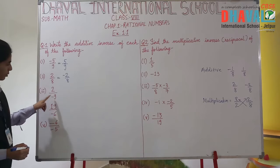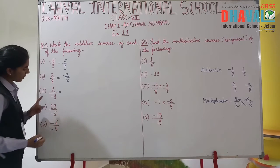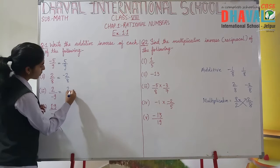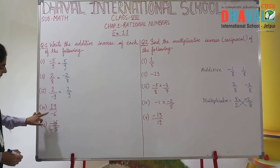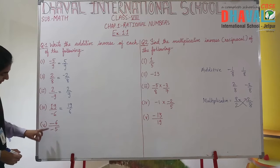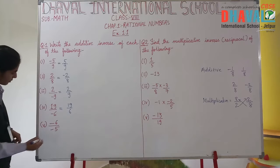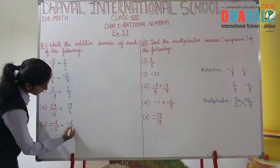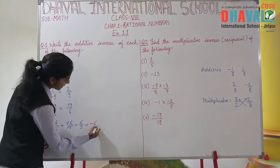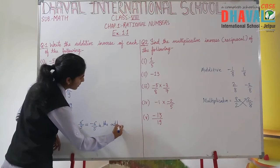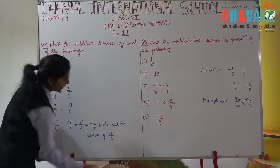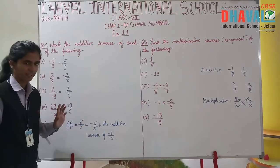The next numbers follow the same pattern. For minus 9, the additive inverse is positive 9. For 19 upon minus 6, we remove the minus sign to get 19 upon 6. For the last one, minus 6 upon minus 5, we cancel the two minus signs and the answer becomes 6 upon 5. Since the original was positive, the additive inverse is minus 6 upon 5.